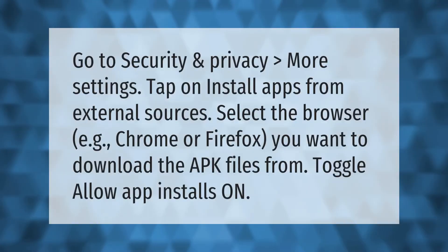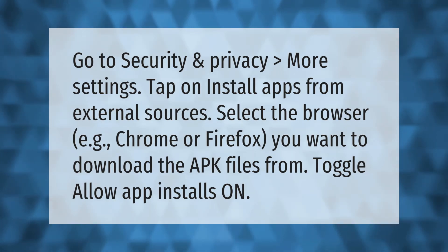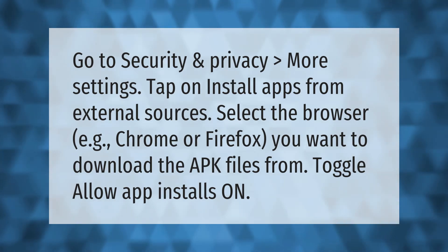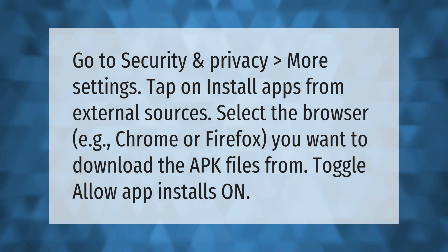Go to Security and Privacy, then More Settings. Tap on 'Install apps from external sources,' select the browser — for example Chrome or Firefox — that you want to download the APK files from, and toggle 'Allow app installs' on.